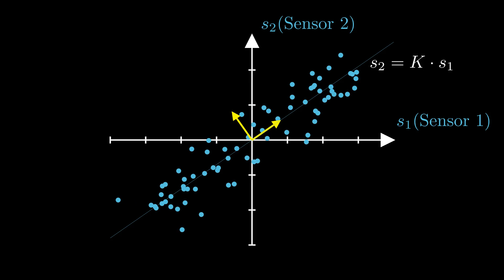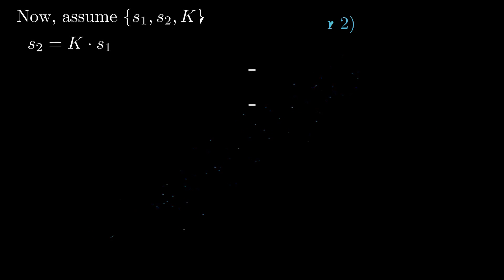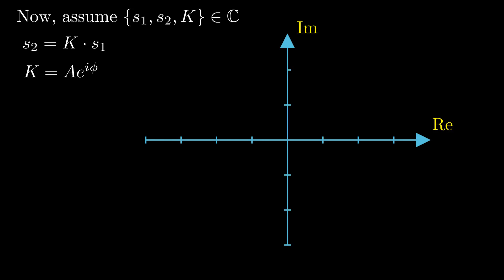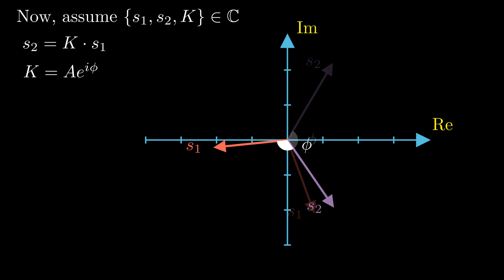When we come back to the noisy sensor case, then the singular vector is attempting to find this relationship by maximizing the energy captured. This constant k, however, could very well be a complex number when the original dataset is complex valued. We can express this as k equals A e to the i phi. In other words, if k is complex, then we have an amplitude A and a phase angle phi. So if the two sensors are out of phase by an angle phi, that would also be captured by the singular vector.